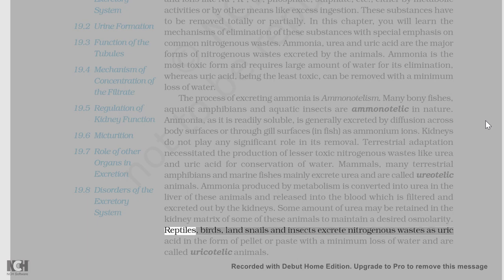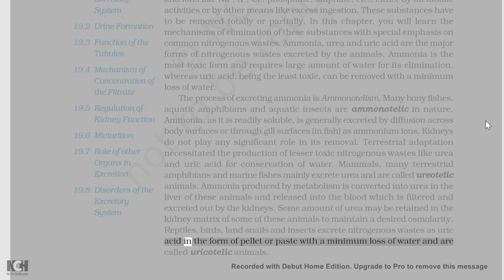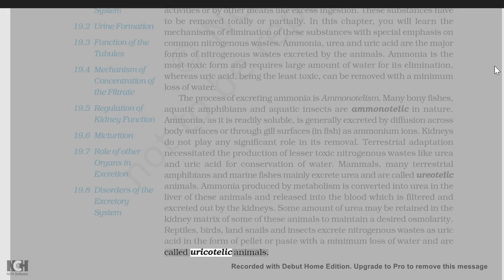Reptiles, birds, land snails, and insects excrete nitrogenous wastes as uric acid in the form of pellet or paste with a minimum loss of water and are called uricotelic animals.